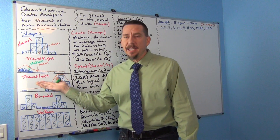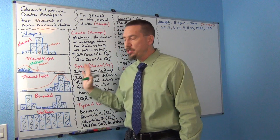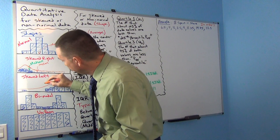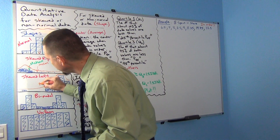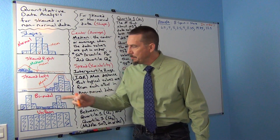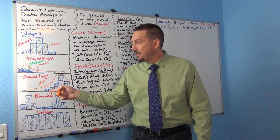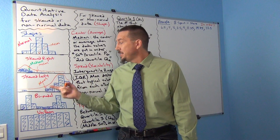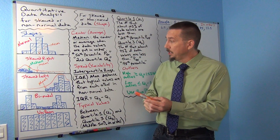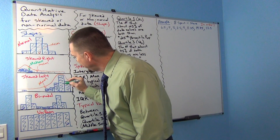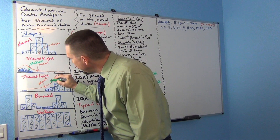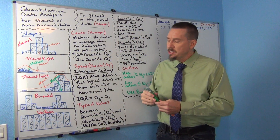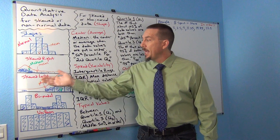Same thing with skewed left data sets — the mean gets pulled in the direction of the skew, landing where there are hardly any numbers in the data set. Yet the mean says that's the average, which is why it's not very accurate. The median, though, would fall closer to the highest bar. That's again why we say the median is more accurate than the mean for skewed data.